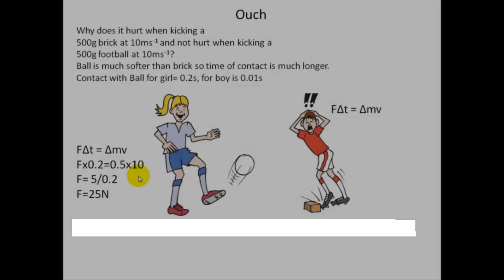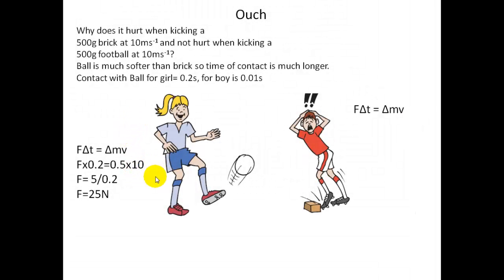For him, he uses the same equation, but ∆t is much smaller. This is much smaller, so force will be much greater. So I'll put these values in. 0.5 times 10 is the same as here. So we have a new force, which is 500 newtons. So the brick exerts a force on his foot of 500 newtons and on her of 25 newtons. So it hurts his foot and not hers.